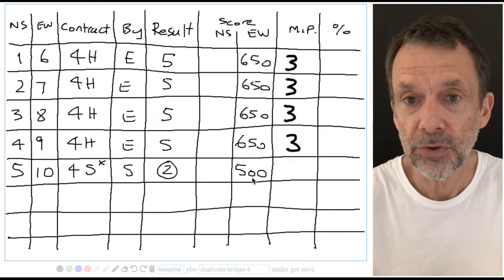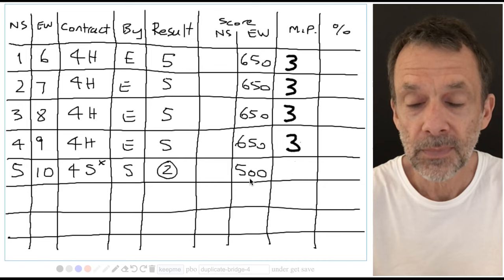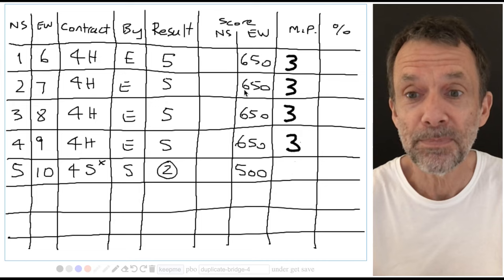Now here we were, minus 500. How many other pairs did we beat? Well, strangely, minus 500 is better than minus 650.